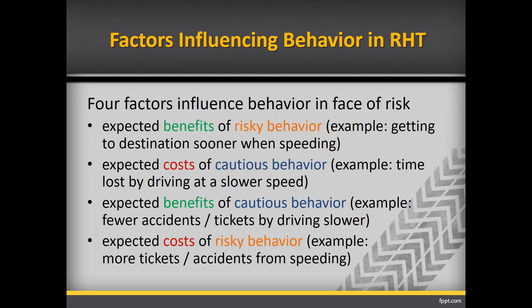There are four main factors that influence behavior in the face of risk. First, the expected benefits of risky behavior, such as getting to your destination sooner when speeding. Second, the expected costs of cautious behavior, such as time lost by driving at a slower speed. Third, the expected benefits of cautious behavior, such as fewer accidents or tickets when you drive slower. And fourth, the expected costs of risky behavior — more tickets and more accidents from speeding.